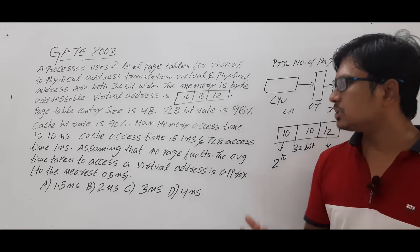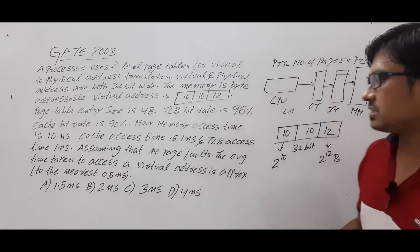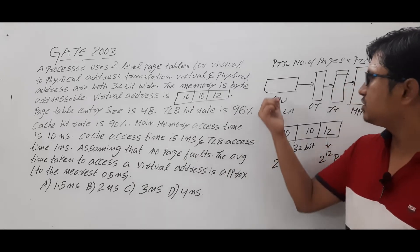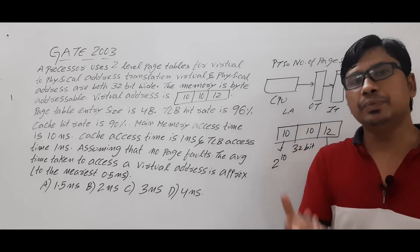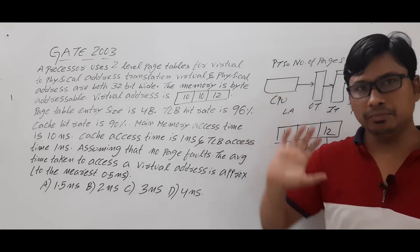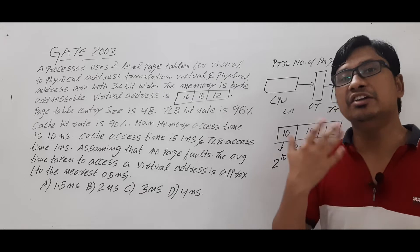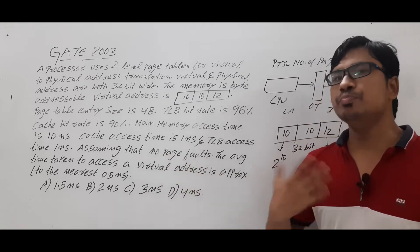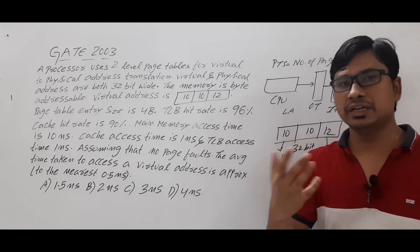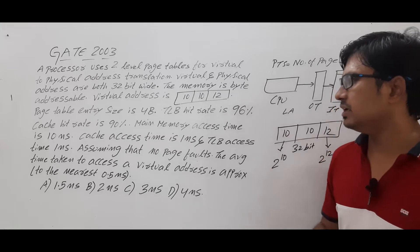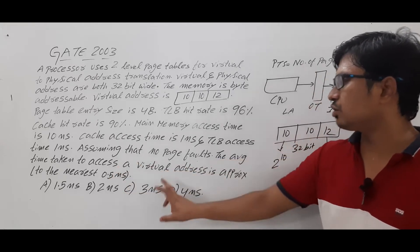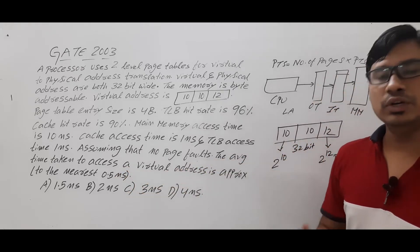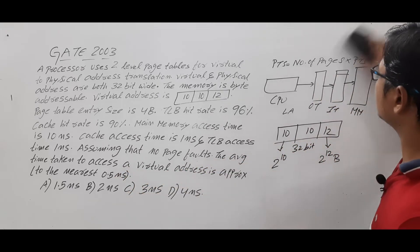Importantly, the question assumes no page faults. If the CPU searches for a particular page number and that page is available in main memory, it is a page hit. If it is not available, it is a page fault. Since we assume no page faults, whatever page the CPU searches for is available in main memory. We need to compute the effective access time to access a virtual address.